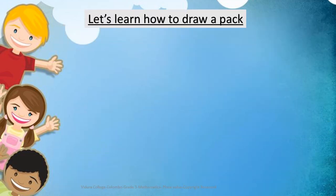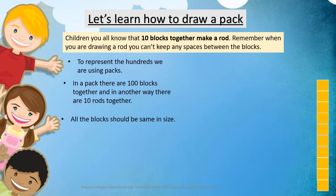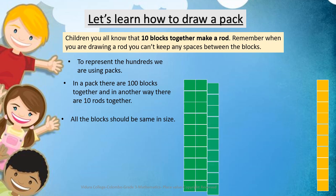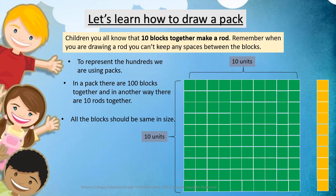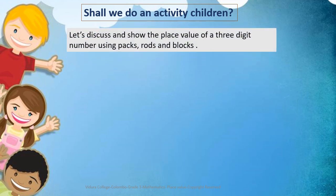Let's learn how to draw a pack. You all know that 10 blocks together make a rod. Remember, when you are drawing a rod, you can't keep any spaces between the blocks. To represent the hundreds, we use packs. In a pack, there are 100 blocks together — in another way, there are 10 rods together. All the blocks should be equal in size. Let's discuss and show the place value of a three-digit number using packs, rods and blocks.